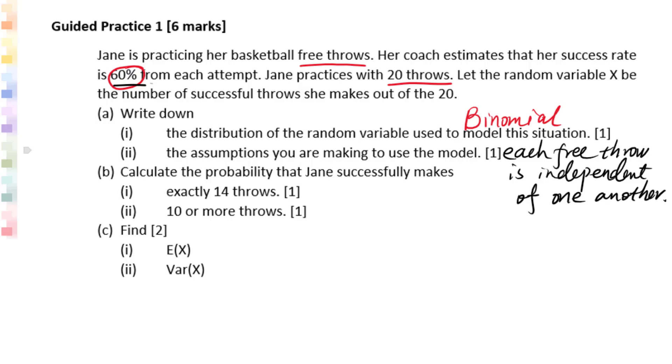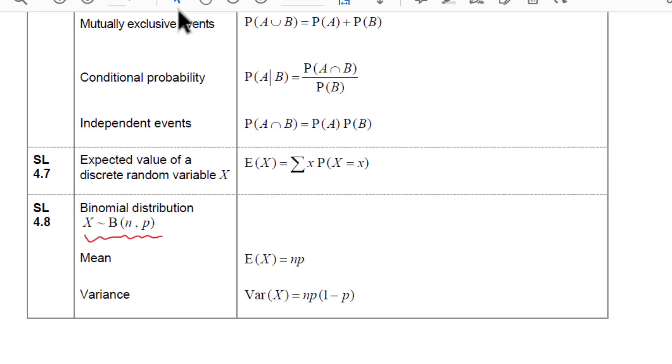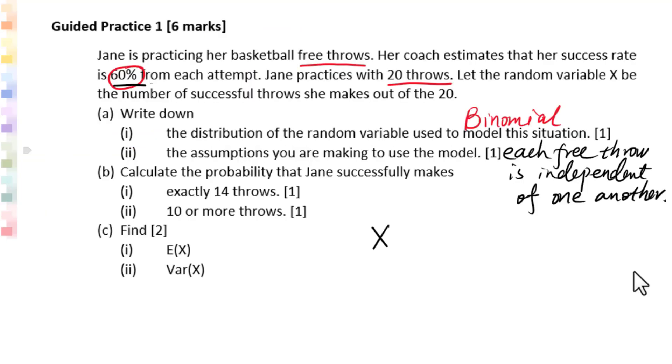Calculate the probability that Jane successfully makes exactly 14 throws. Let's check binomial distribution. X follows binomial distribution with a success rate P. So we will write X follows binomial distribution, trial 20, successful rate is 0.6. We are looking for probability when X equals 14.